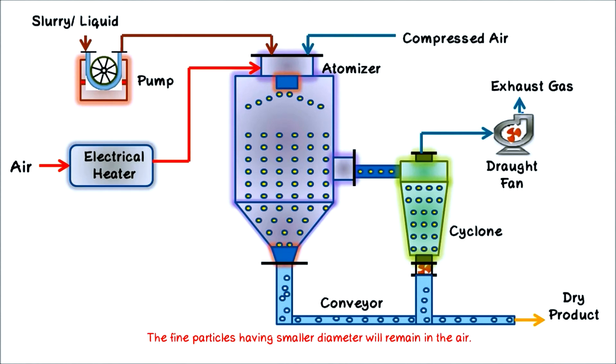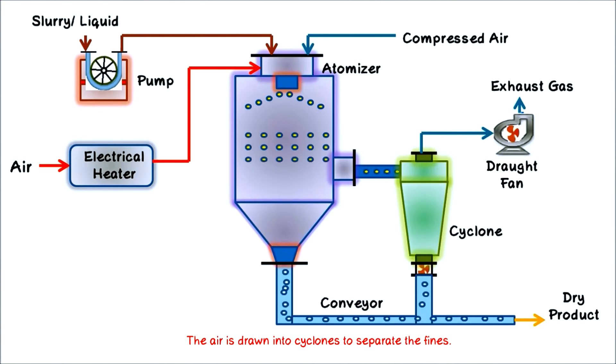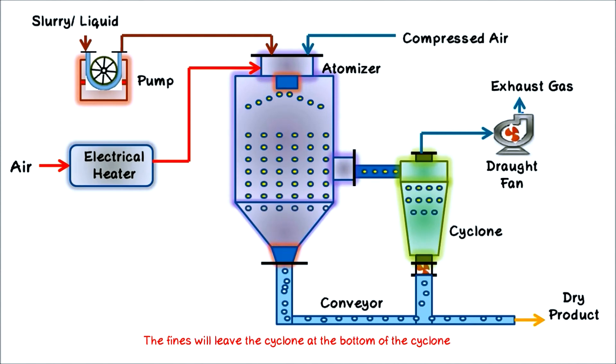The fine particles having smaller diameter will remain in the air. The air is drawn into cyclones to separate the fines. The fines will leave the cyclone at the bottom together with the dried product via the conveyor.